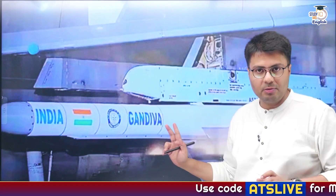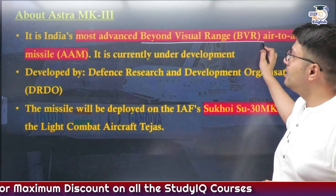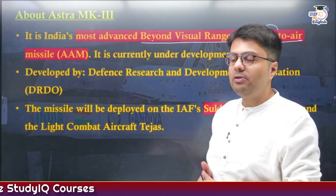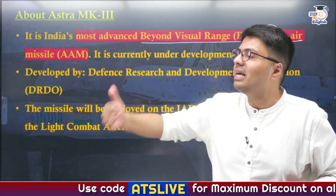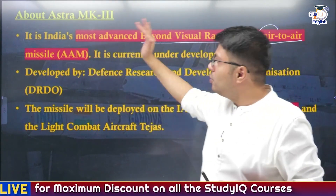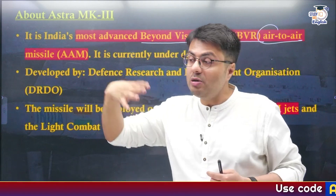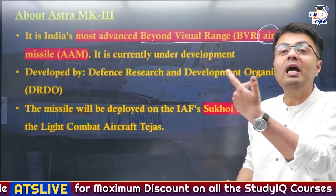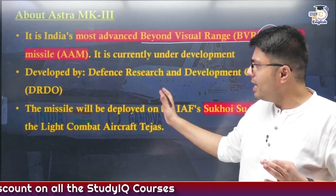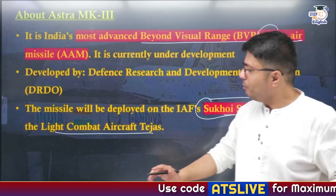In our last topic, let us discuss the Astra Mark III missile system, popularly known as the Gandiv missile system. This is a beyond visual range air-to-air missile system. During the Balakot airstrikes, one of the lacunas Indian Air Force experienced was that it did not have indigenously designed missile systems capable of destroying enemy aircraft at much higher ranges. To address this, Indian Armed Forces and DRDO developed the Astra Missiles, which enable Indian Air Force aircraft to target enemy aircraft at much further distances, even beyond the pilot's visual range — hence called BVR or Beyond Visual Range missiles. These will be deployed on Sukhoi 30 MKI jets and LCA Tejas aircraft.